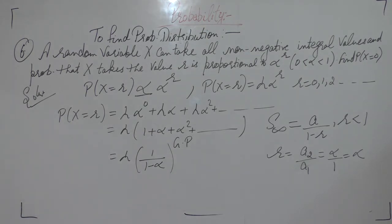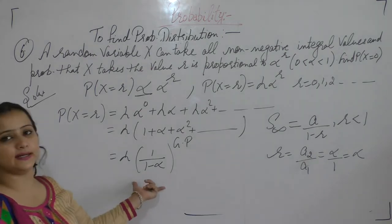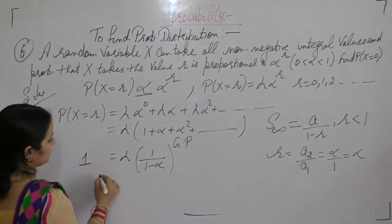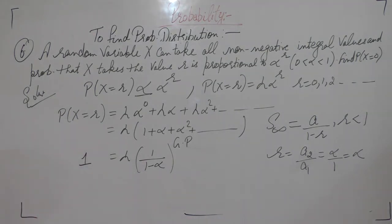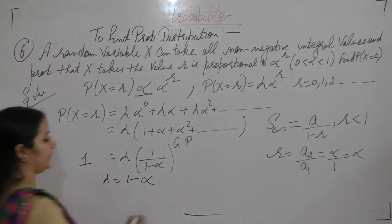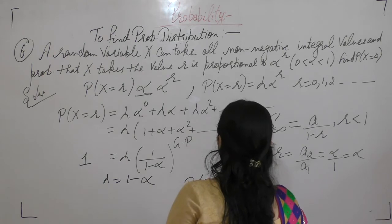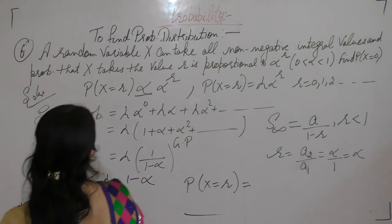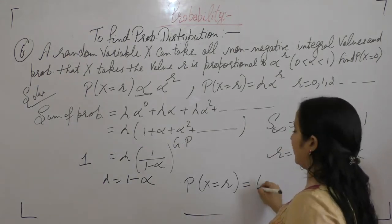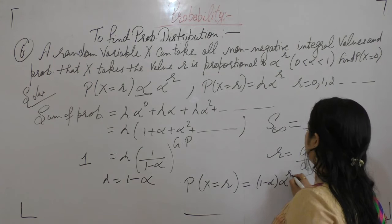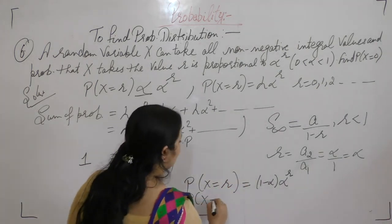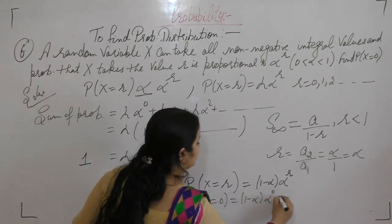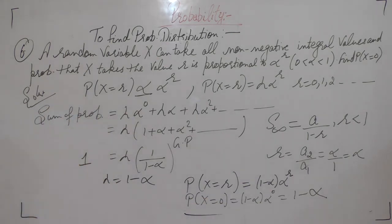We know the sum of the total probability distribution is always 1. So 1 equals lambda times (1 upon 1 minus alpha), giving lambda equals 1 minus alpha. So probability at X equals R is (1 minus alpha) times alpha^R. Now we want probability at X equals 0: alpha^0 is 1, so probability at X equals 0 is 1 minus alpha.